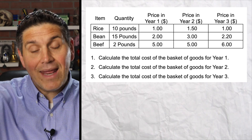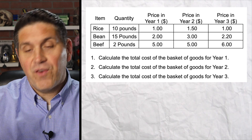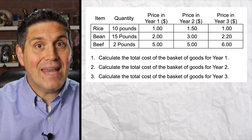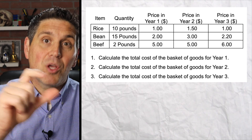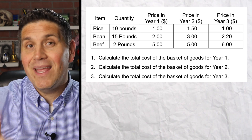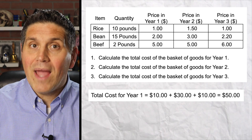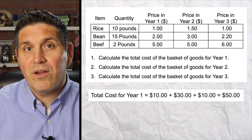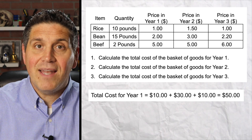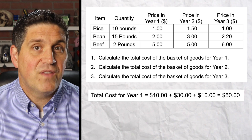Just remember, you're not adding up the prices for that given year. So for year one, it's not $8. You have to multiply it times the quantity of the items in the market basket. So for year one, the rice is $10, the beans are $30, and the beef is $10, for a grand total of $50.